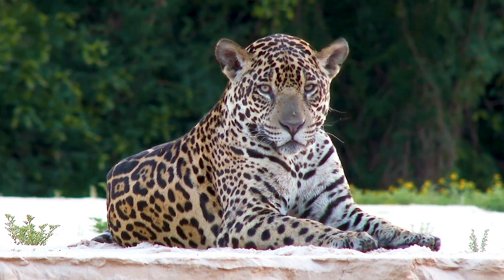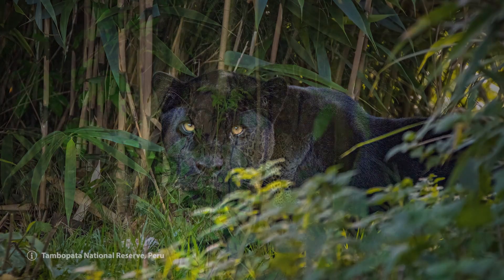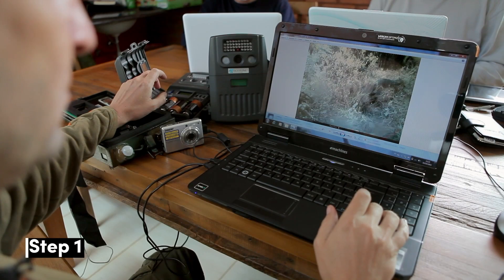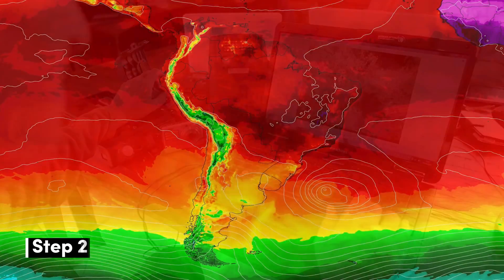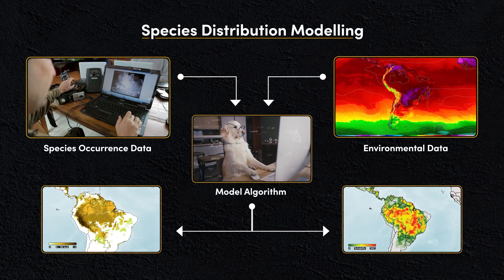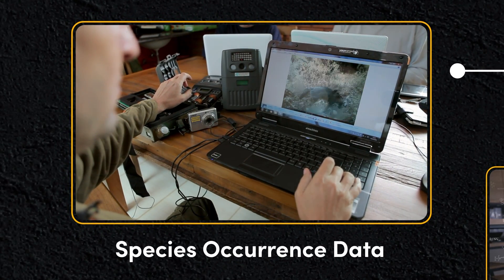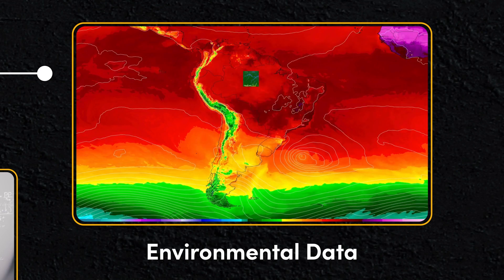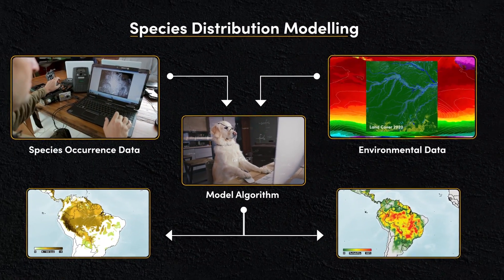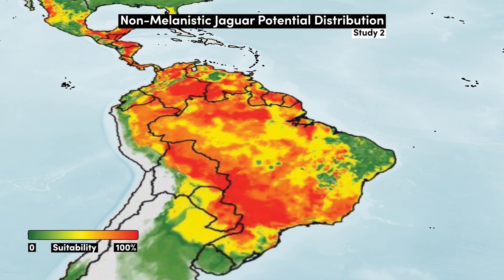Estimating population size is crucial for the conservation of many animals, but can be notoriously difficult, especially for elusive species like the jaguar. Over the last few decades, researchers have developed a powerful tool to make this process more accurate. Species distribution modelling combines species data, such as camera trap studies or surveys, with environmental data such as temperature or land cover, to model the relationship between the two in order to predict potential population density or potential distribution.